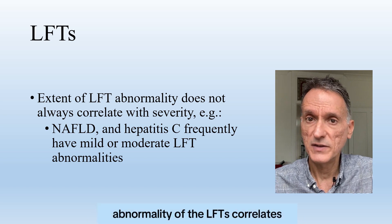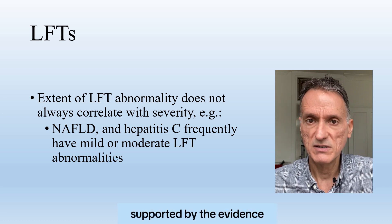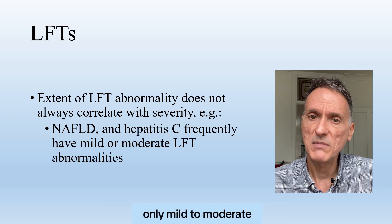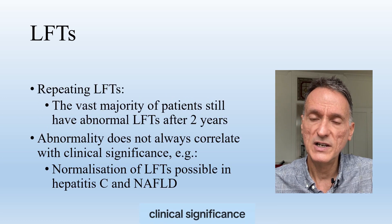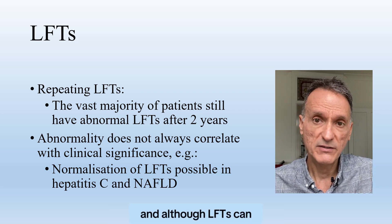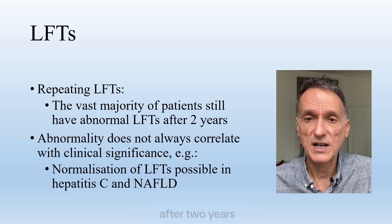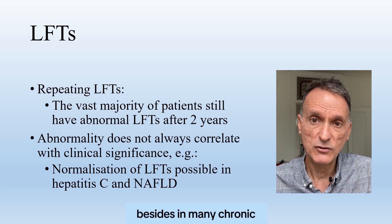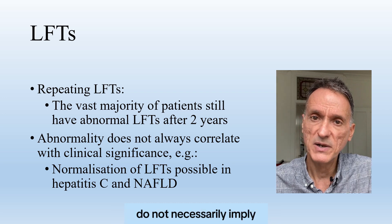So what should we do when confronted by abnormal LFTs? We often think that the extent of abnormality correlates with the severity of the problem. However, this assumption is not supported by the evidence. Common conditions leading to chronic liver disease, like NAFLD and hepatitis C, are frequently associated with only mild to moderate LFT abnormalities. There's also the assumption that the duration of abnormal LFTs reflects clinical significance, so we often keep repeating them hoping they will improve. Although LFTs can occasionally be high due to intercurrent illness, studies have shown that the vast majority still have abnormal LFTs after two years, and therefore a strategy of simply repeating them can rarely be justified. In many chronic liver diseases such as hepatitis C and NAFLD, the LFTs returning to normal do not necessarily imply resolution of the disease.